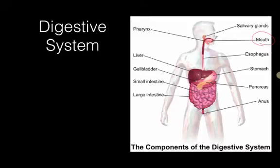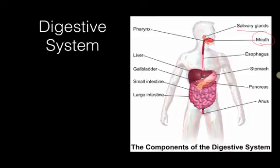Chewing breaks food down into smaller pieces — that's called mechanical digestion. Saliva is also produced in the mouth, and it mixes with the food to start breaking it down chemically. That mashed-up food mixed with saliva is called a bolus, and it starts to work its way down through the digestive system.